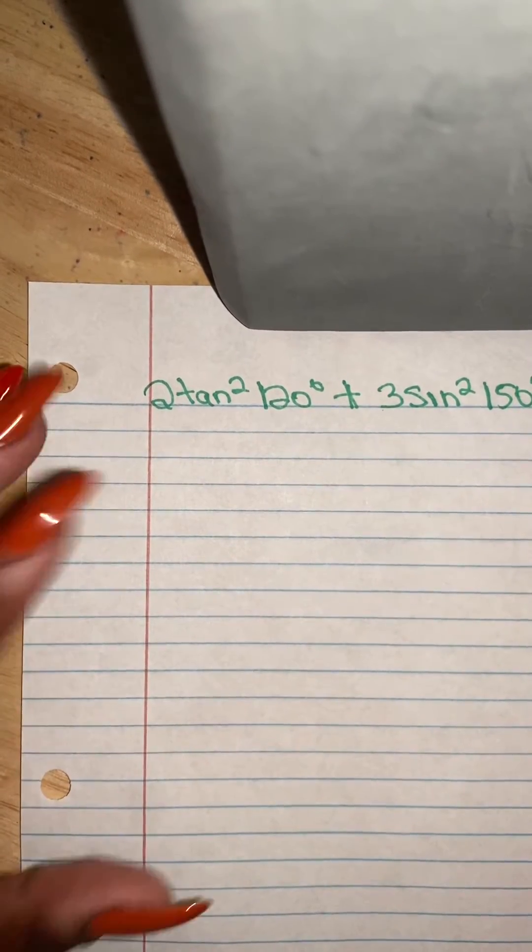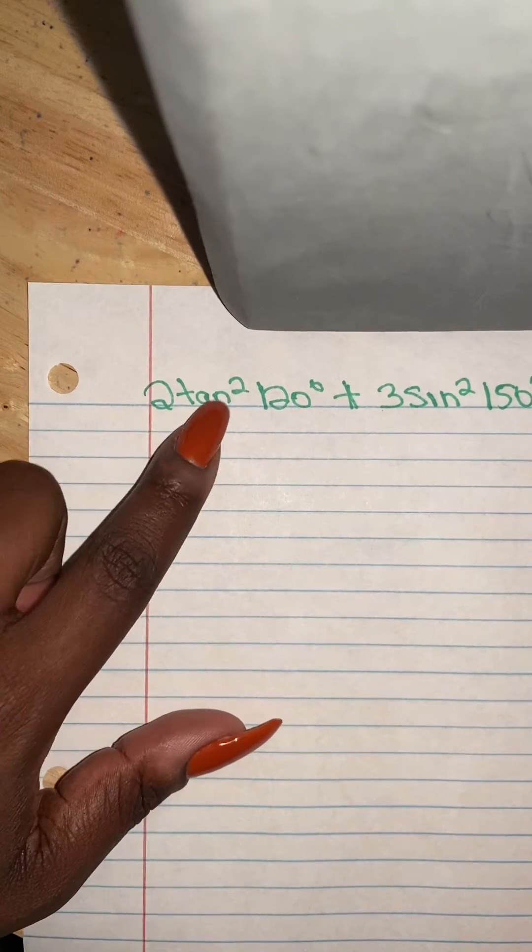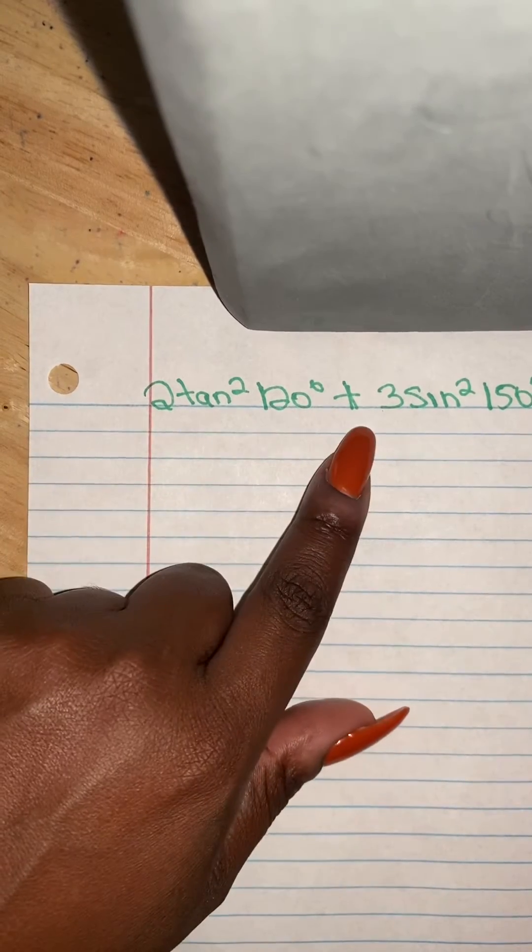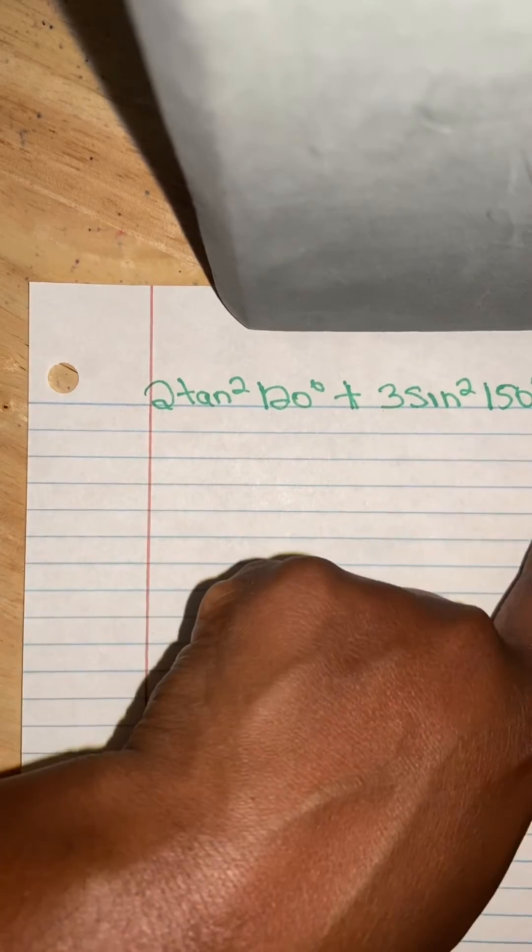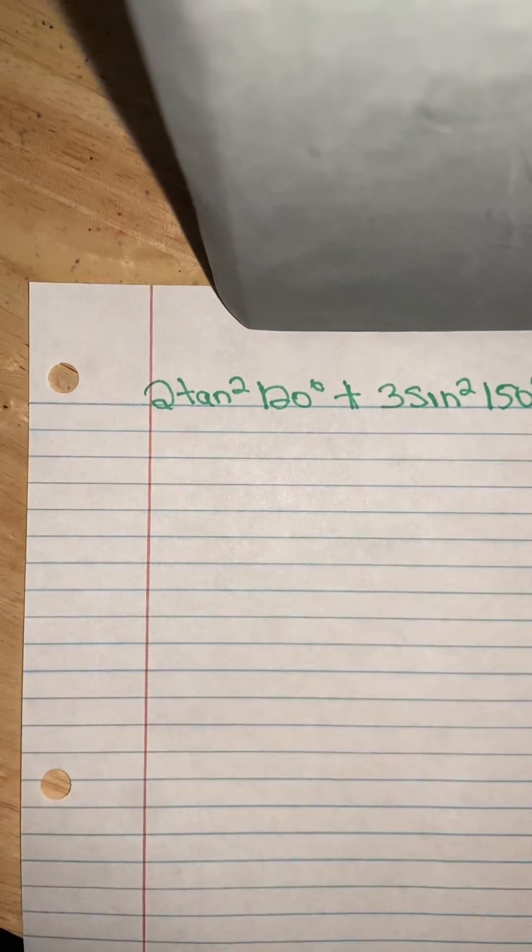So let's begin by just reading our problem. It says 2 times tangent squared 120 degrees, plus 3 times sine squared 150 degrees, minus cosine squared of 180 degrees.